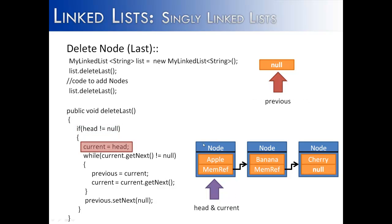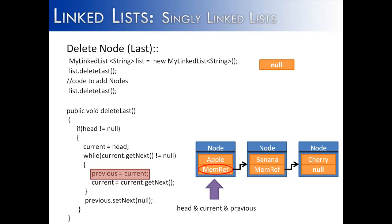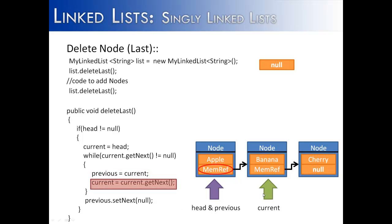Head is not null because it is the first node in this list. So head and current are now referencing the first node — current was moved from null to the first node. We check the while loop condition: current.getNext is not equal to null, it is equal to the banana node. So previous equals current, meaning all three — head, current, and previous — reference the first node. Then current moves to the next node via current.getNext, which is a reference to the banana node.